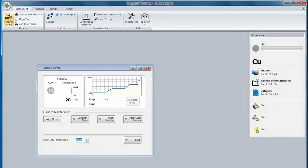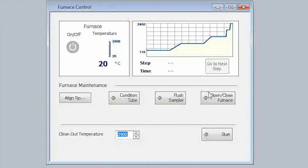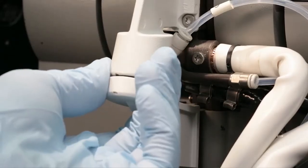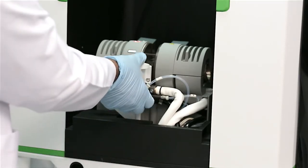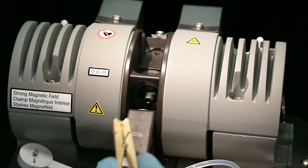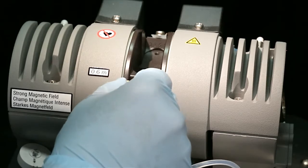Click the open/close furnace button in the furnace control window of the software, then swing the support lever to the side and tilt the front contact housing downwards. Use the insertion removal tool to remove the graphite tube.